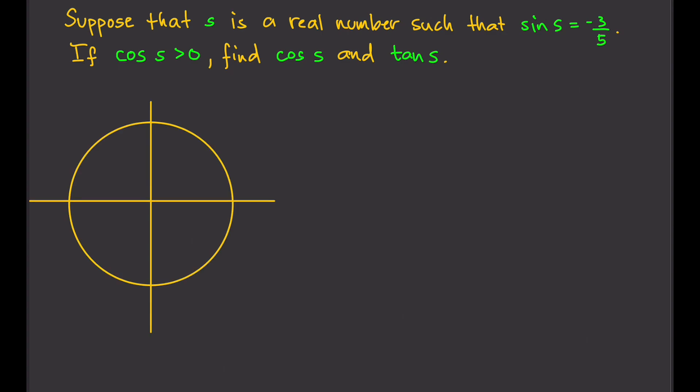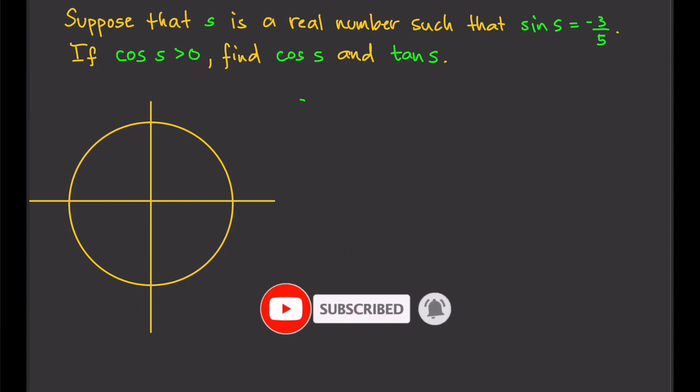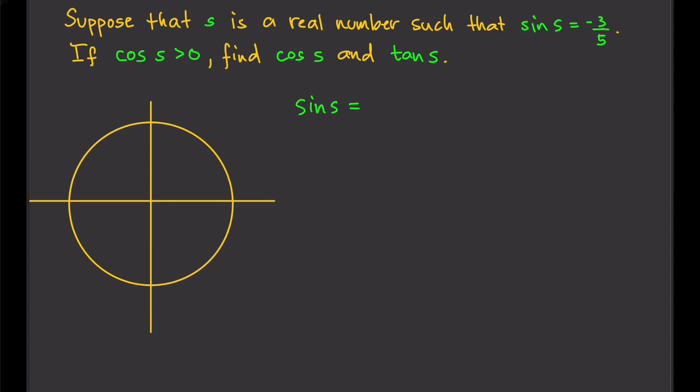We are given sine s equals negative three-fifths. Remember, sine s equals the y-coordinate. Therefore y equals negative three-fifths. So y is negative three-fifths — let's approximate that position, so approximately three-fifths down.